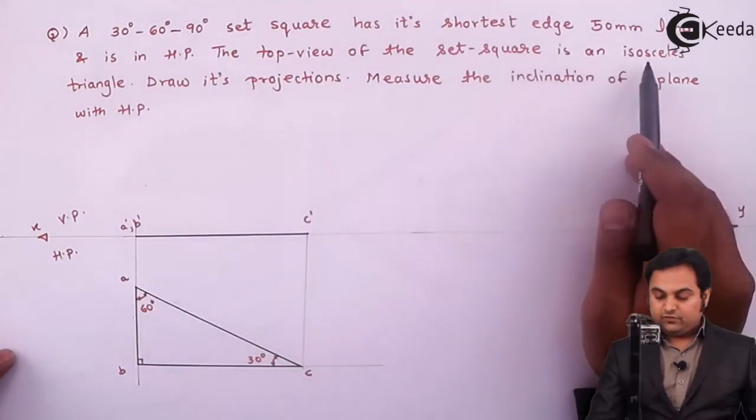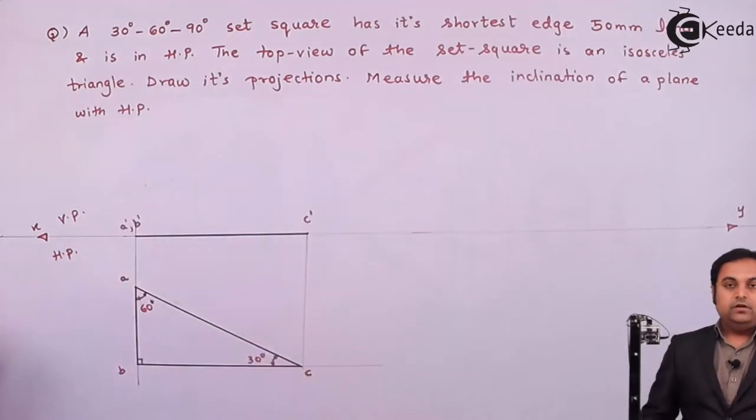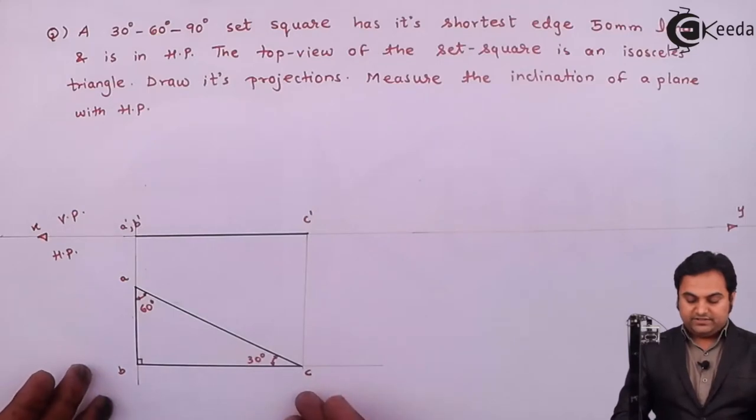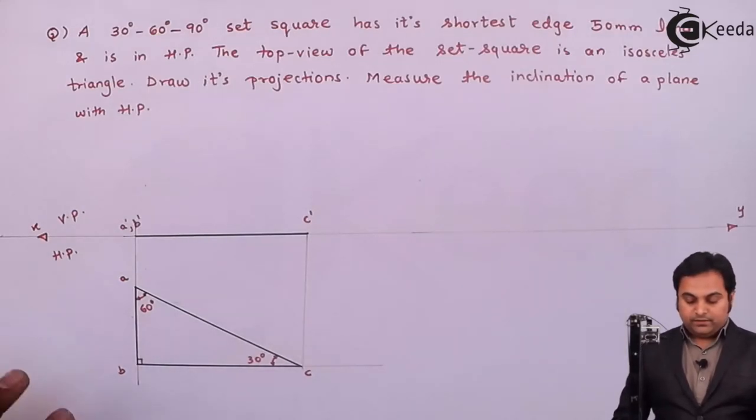The next condition is, the top view of the set square is an isosceles triangle. So at first, this set square is kept as it is horizontally on the ground.